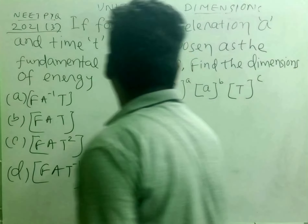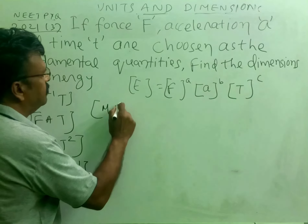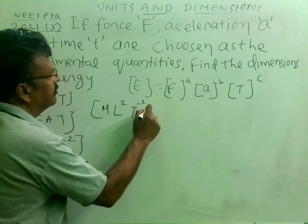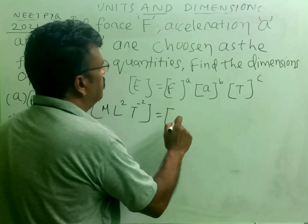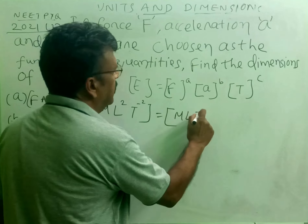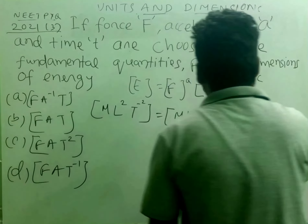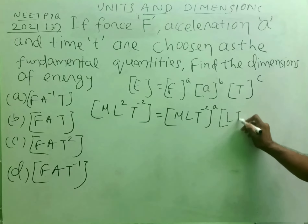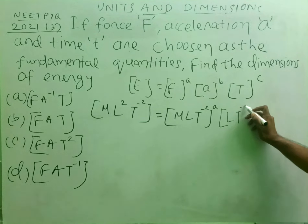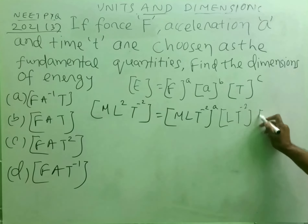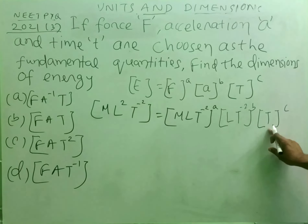What are the dimensions of the left-hand side, that is, of energy? We know that is ML²T⁻², same as that of work. And what are the dimensions of force? That is MLT⁻² to the power a. What is the dimensional formula for acceleration? Acceleration is the rate of change of velocity, and that is LT⁻², and time t is simply T.